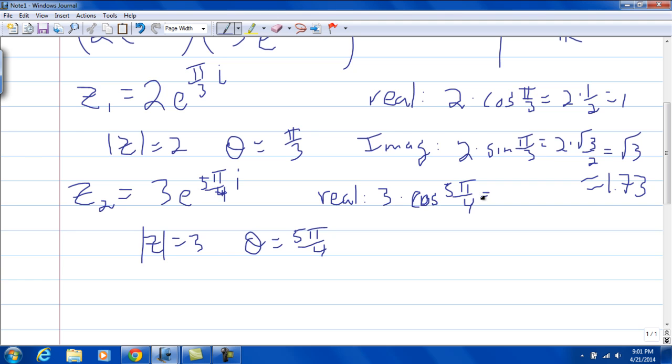And that's going to be what? That's the third quadrant, so 3 times negative square root of 2 over 2, which would be approximately negative 2.12.